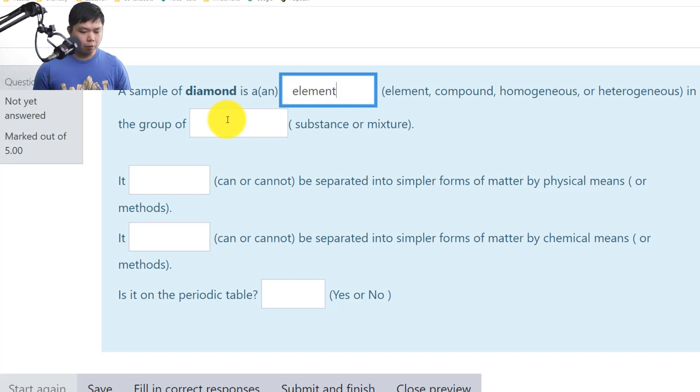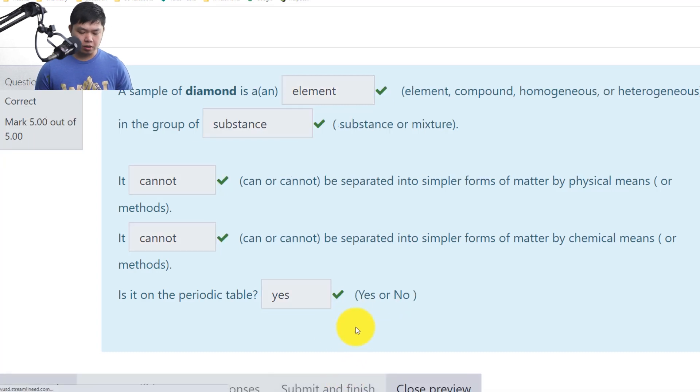So in what group? It is a substance. There you go. And it cannot be separated by physical means. We cannot. And then what about chemical means? No, we cannot as well. And is this on the periodic table? Yes. But not in terms of diamond, but it is carbon. So let's finish. There you go.